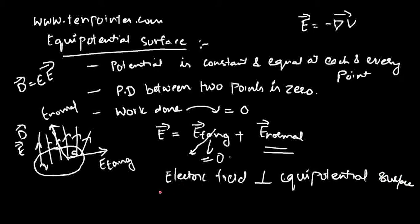Electric field lines and equipotential lines cut each other orthogonally. Electric field lines are orthogonal to equipotential lines. The lines on an equipotential surface are called equipotential lines. If the electric field lines are perpendicular to equipotential lines, then it is said to be an equipotential surface. Whenever you see that the electric field is perpendicular to a surface, you can consider it as an equipotential surface.